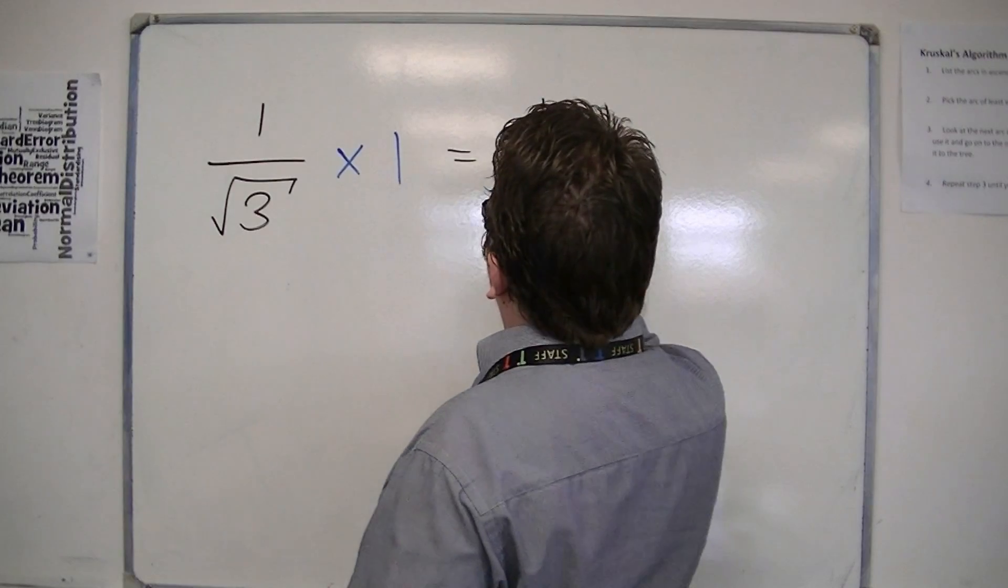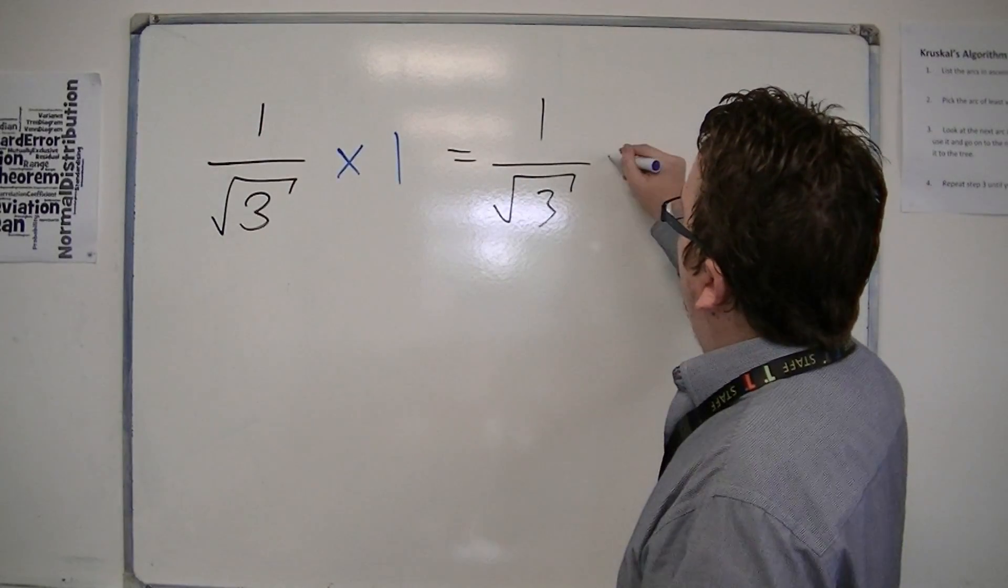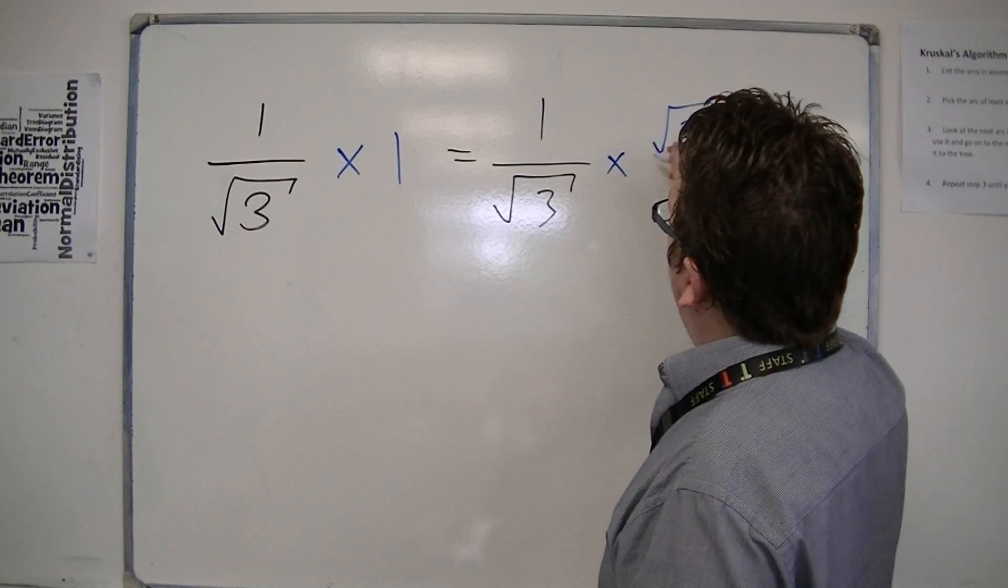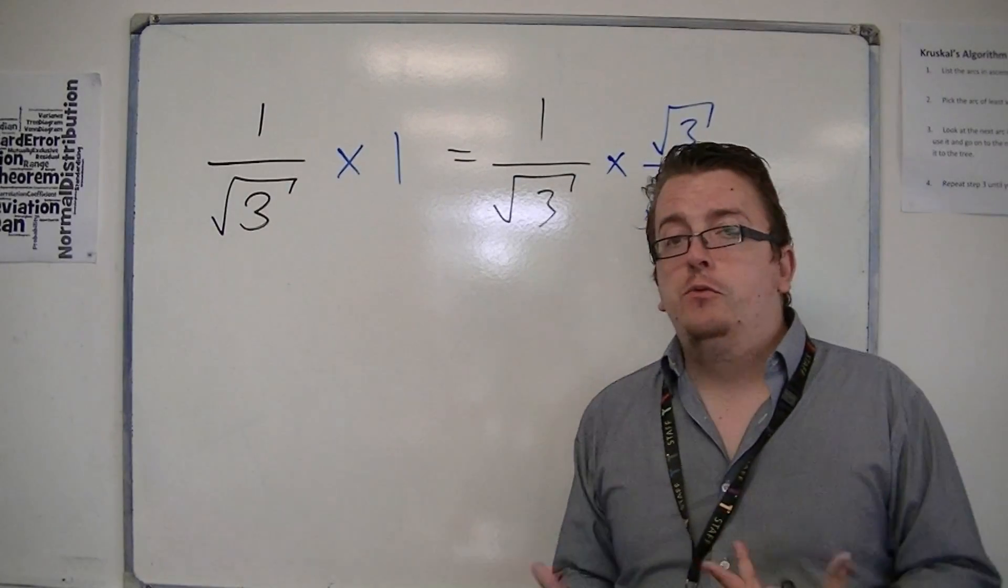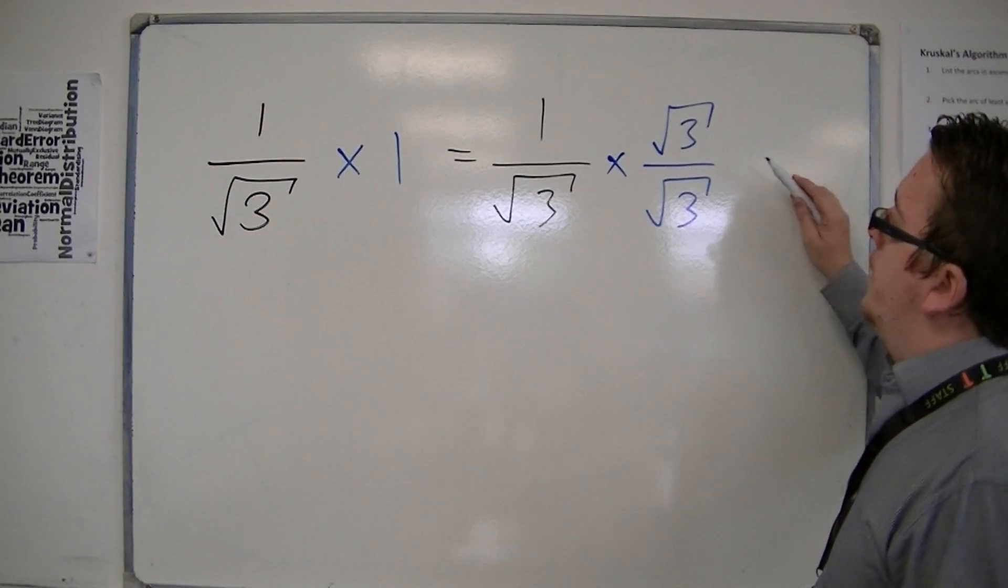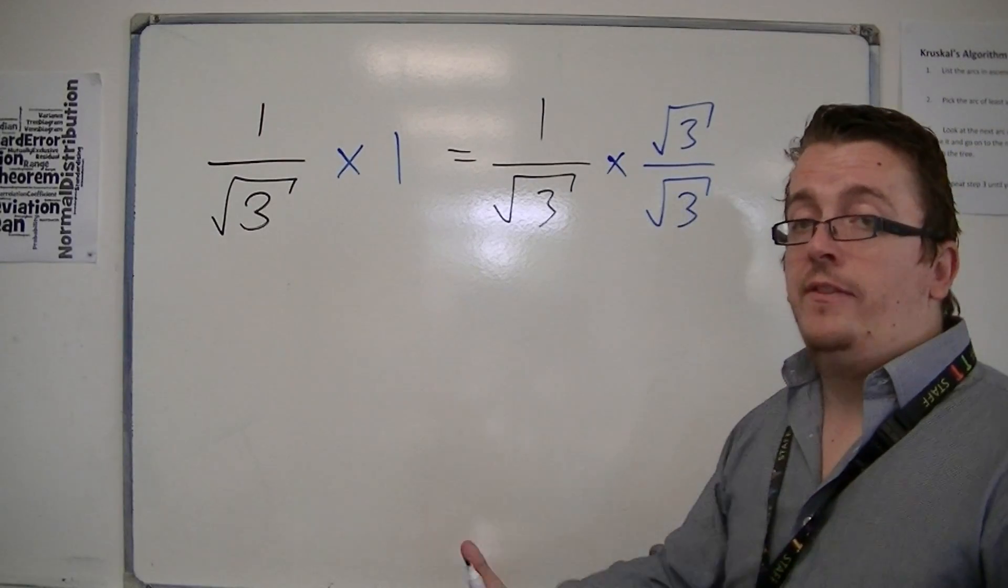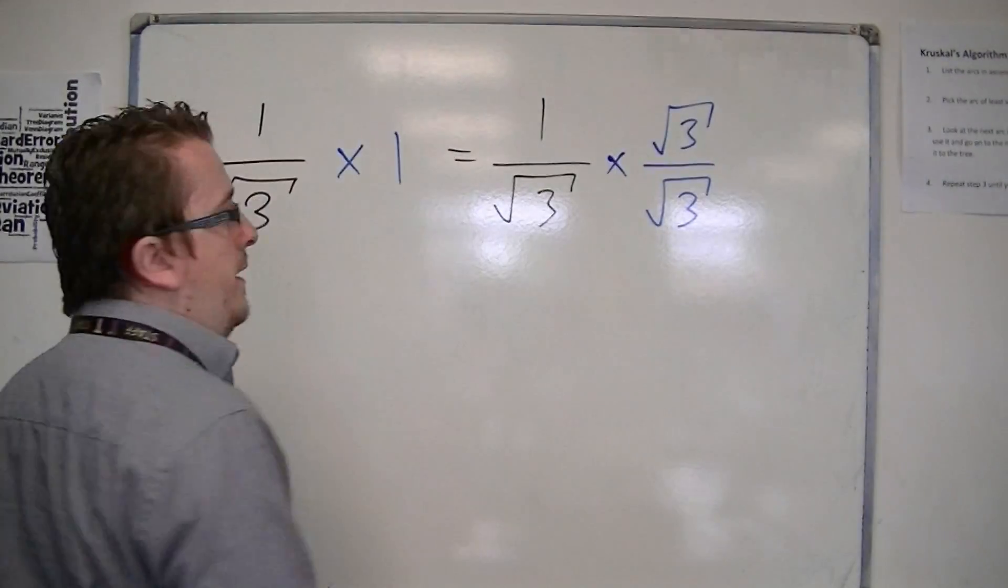If I decided to write the 1 in a different format, and what I mean by that is, if I write it instead as root 3 over root 3, then still nothing has changed. Root 3 over root 3 is still 1. The same number is in the numerator and denominator. So nothing has actually changed here.